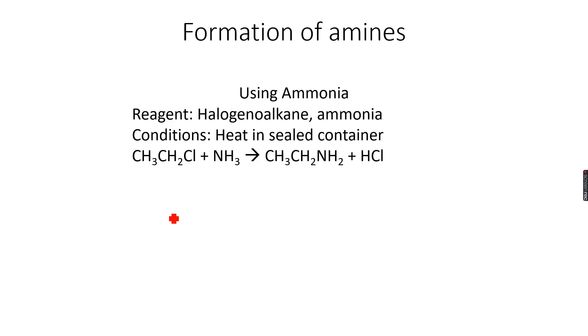Formation of amines - how do we really make these amines? The first way is to use ammonia and a halogenoalkane. I have taken chloroethane in this case, which is two carbon atoms attached to chlorine. The condition is that we have to heat the reagents in a sealed container - remember to write this if you want the marks.